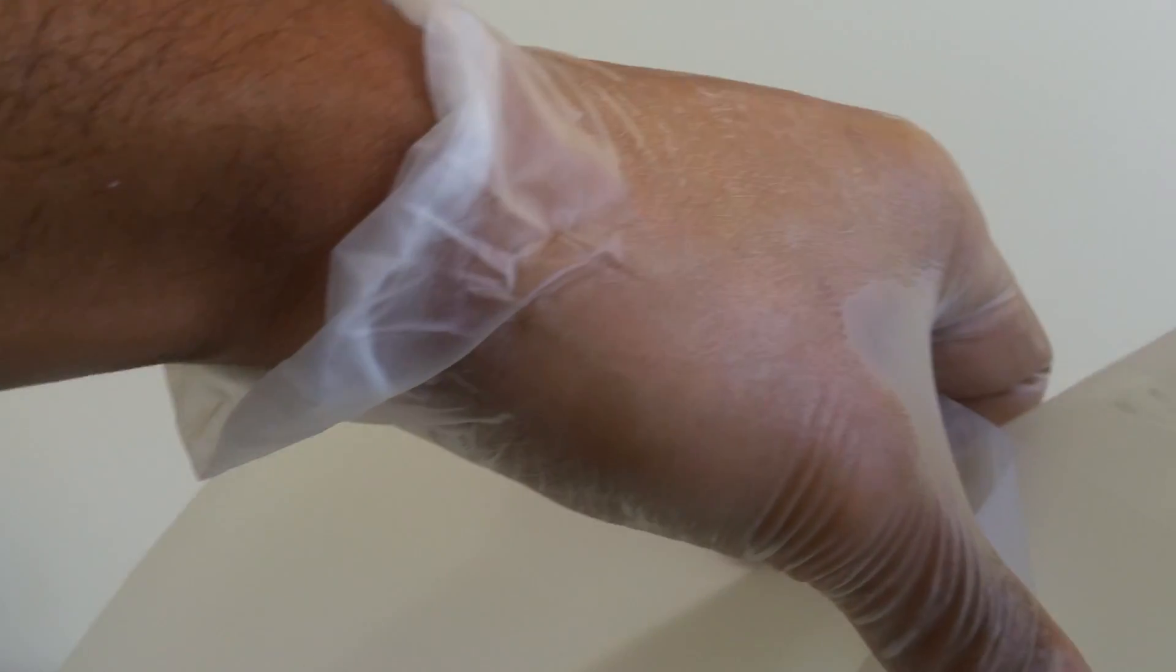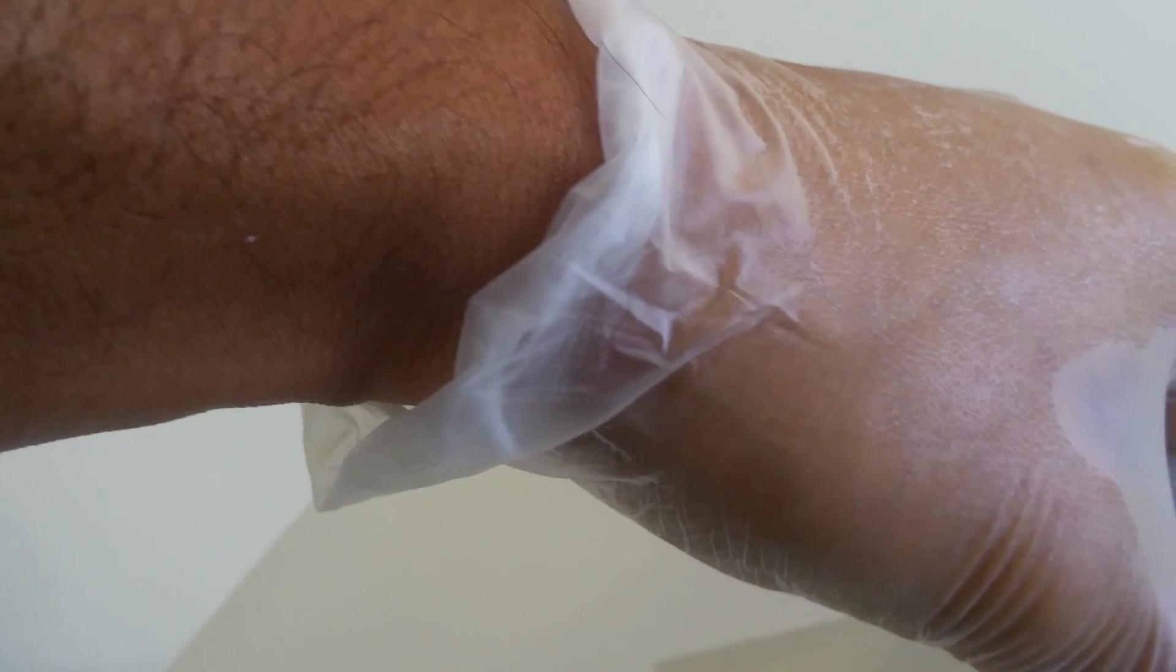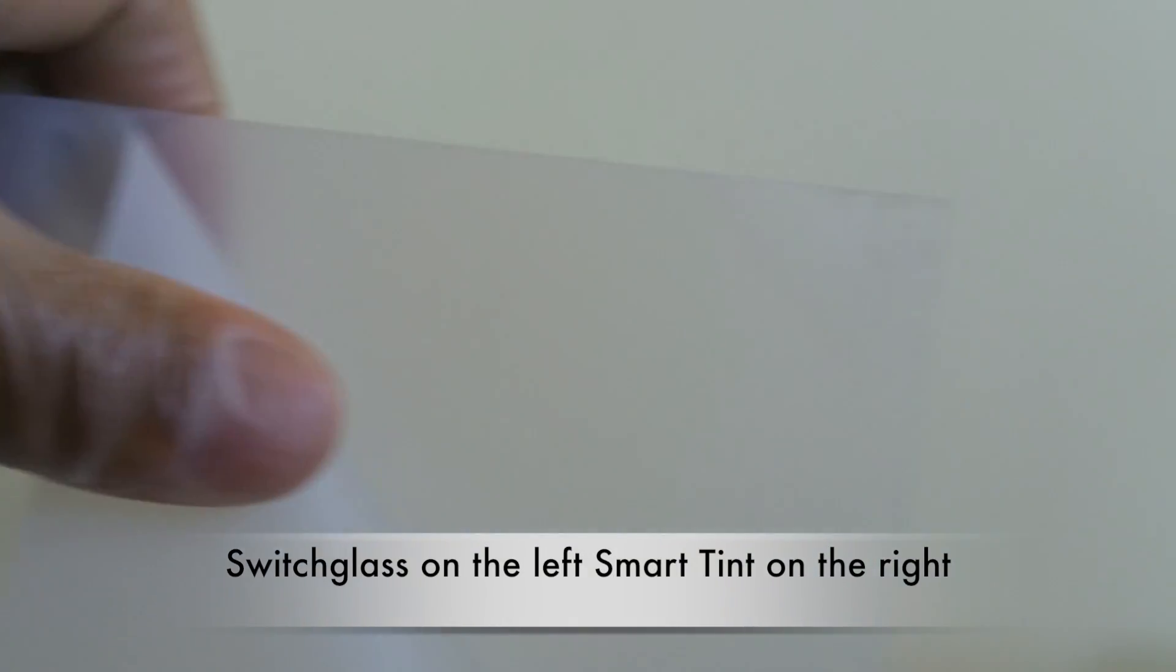But with smart film, the smart film is external and it's not protected. That's why when the humidity gets to it, this is what happens.